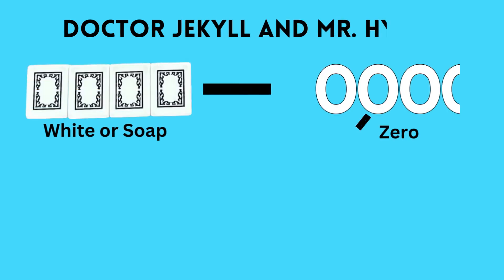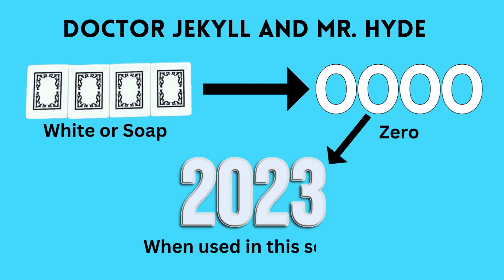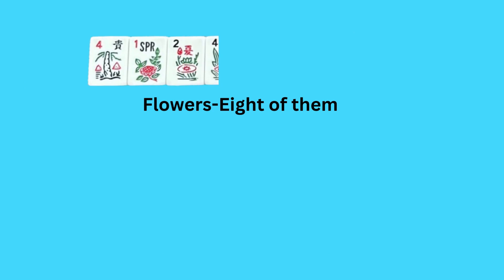Now we're going to revisit our white or soap dragon tile, because I refer to this tile as the Dr. Jekyll and Mr. Hyde tile — because when used in a 2023 section, they are used as zeros. You'll see how this plays out when we learn about the card in the next lesson.